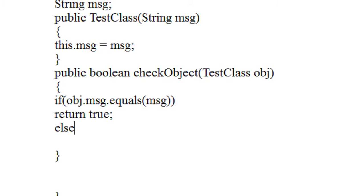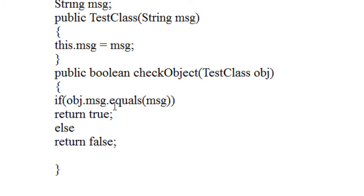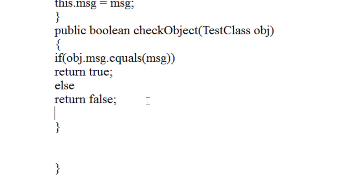Otherwise it will return false. So here I compare the values of two objects — here is the object that is passed, and I compare it with another object. If they are found to be equal, it returns true; otherwise it returns false.